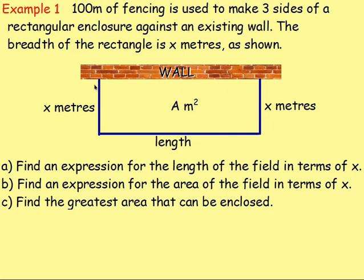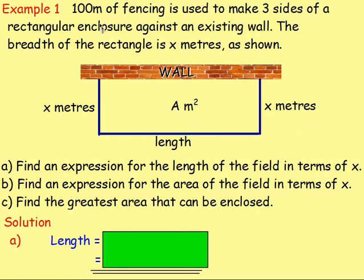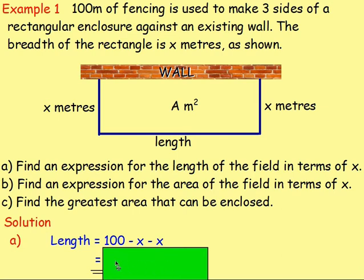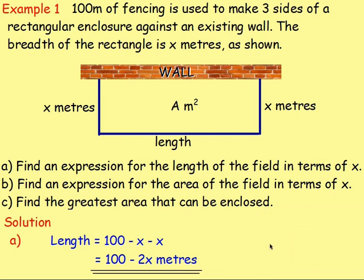We have a picture of the wall, and the blue line represents the fence. At each end you have x — the breadth of the rectangle is x — and the length we don't know. Part a asks for an expression for the length in terms of x. Since there are 100 metres of fencing, and the two breadths are both x, the length is 100 minus x minus x, which gives 100 minus 2x.